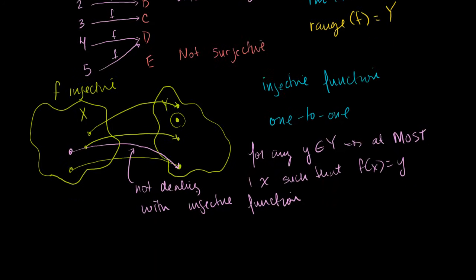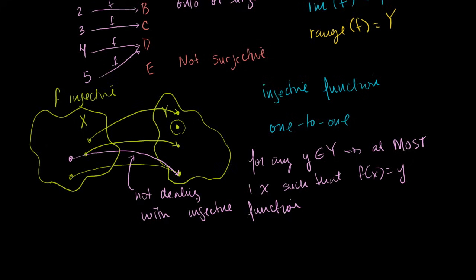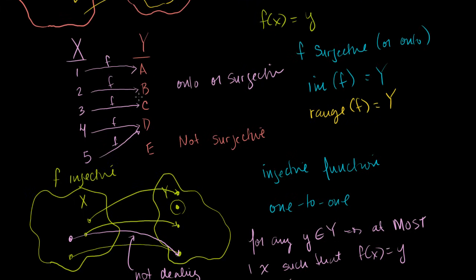Going back to our example with element e added: it's not surjective because e doesn't get mapped to, and it's not injective because f(4) and f(5) both map to d. If I delete that duplicate mapping and instead set f(5) equal to e, now everything is one-to-one — no two elements of X map to the same element of Y — and everything in Y gets mapped to. So this is both onto and one-to-one.